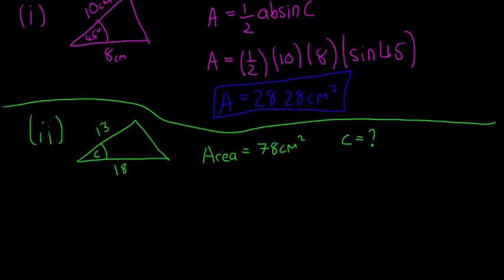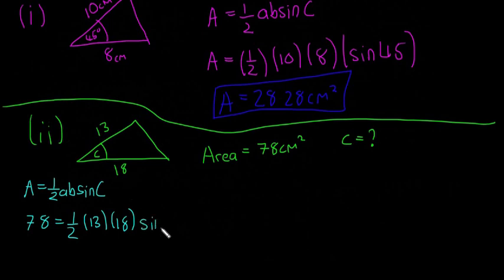So I'm going to start by writing out the formula. I'll go bright blue. So I'm going to say A is equal to half AB sine of C. So that means that if we plug our values in, 78 is equal to half by, let's say, one side is 13. The other side is 18. It doesn't really matter which order, which one's A, which one's B. It doesn't matter which one you put in. Multiplied by sine of C.